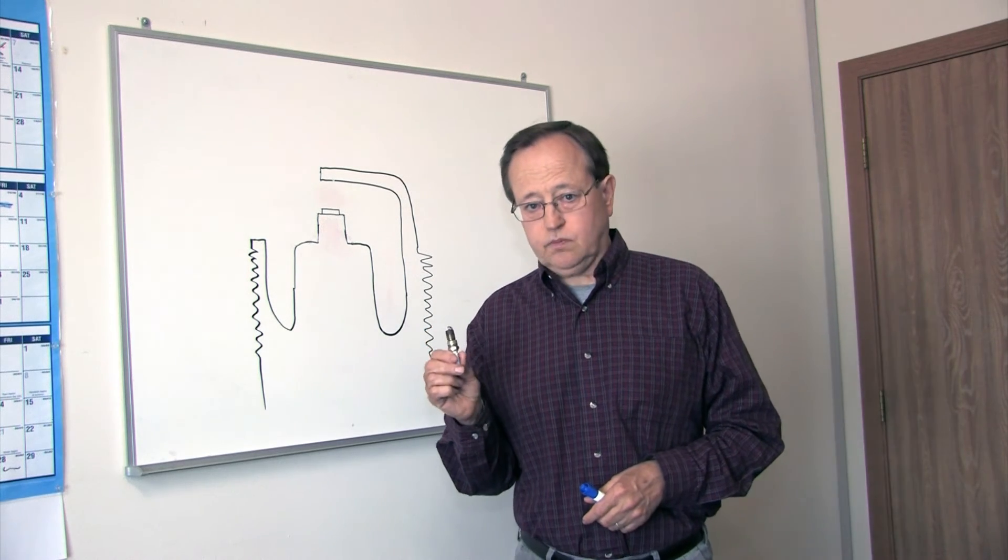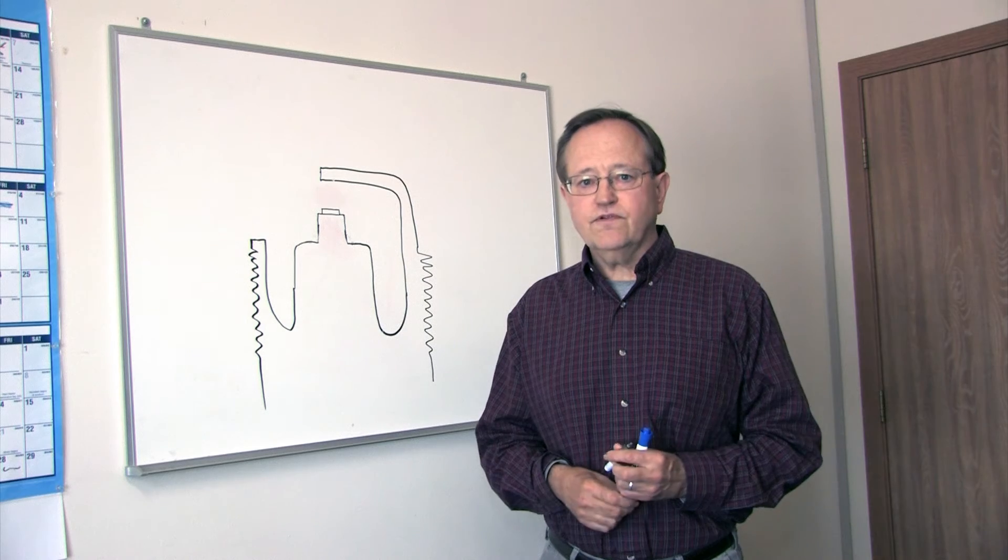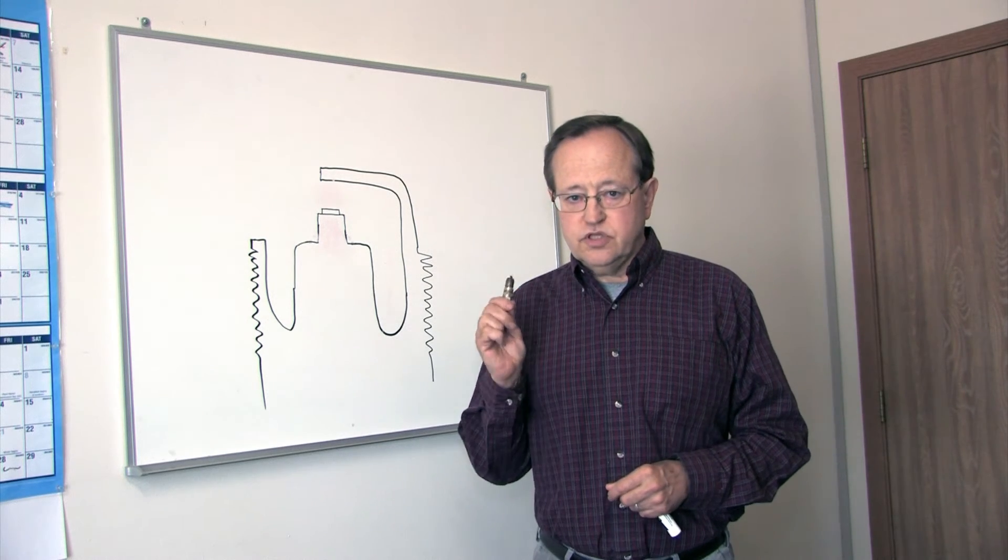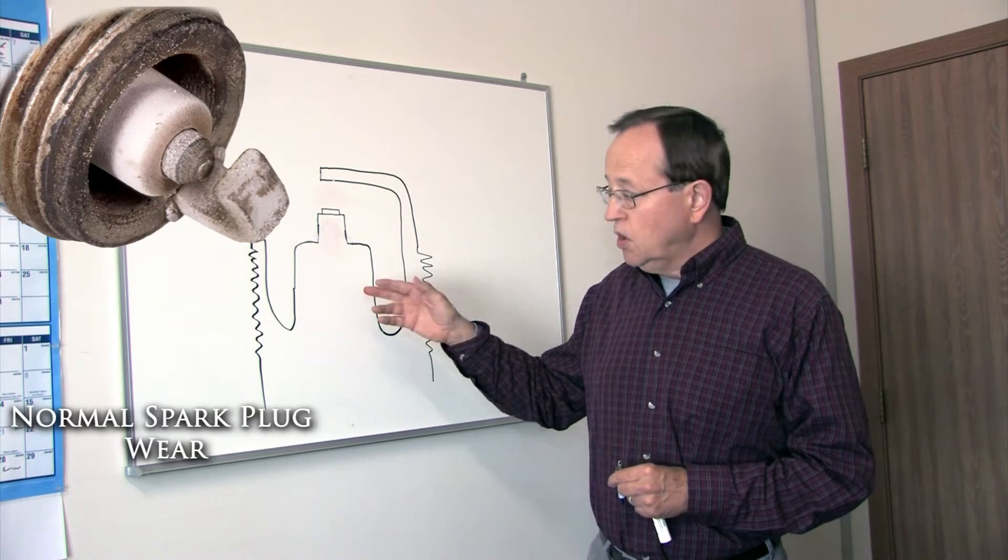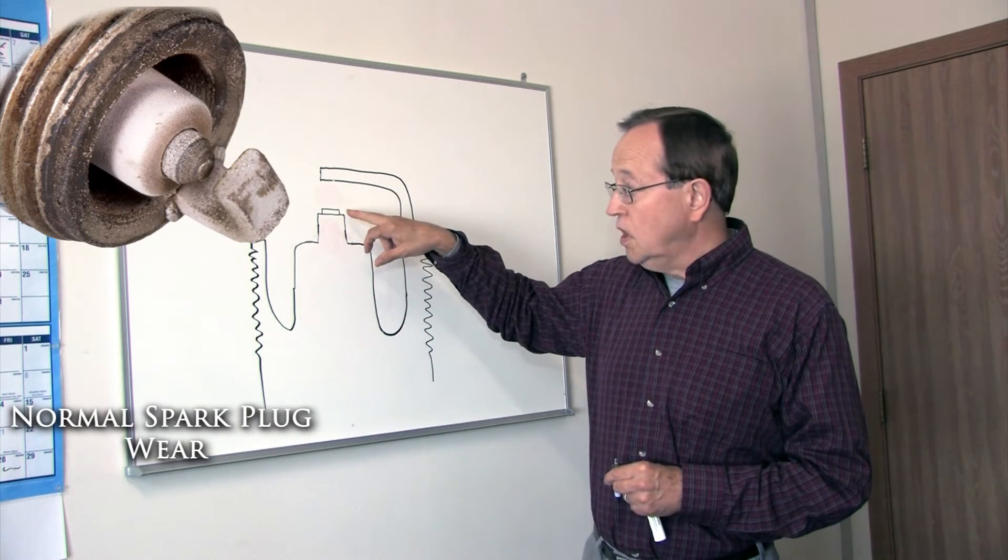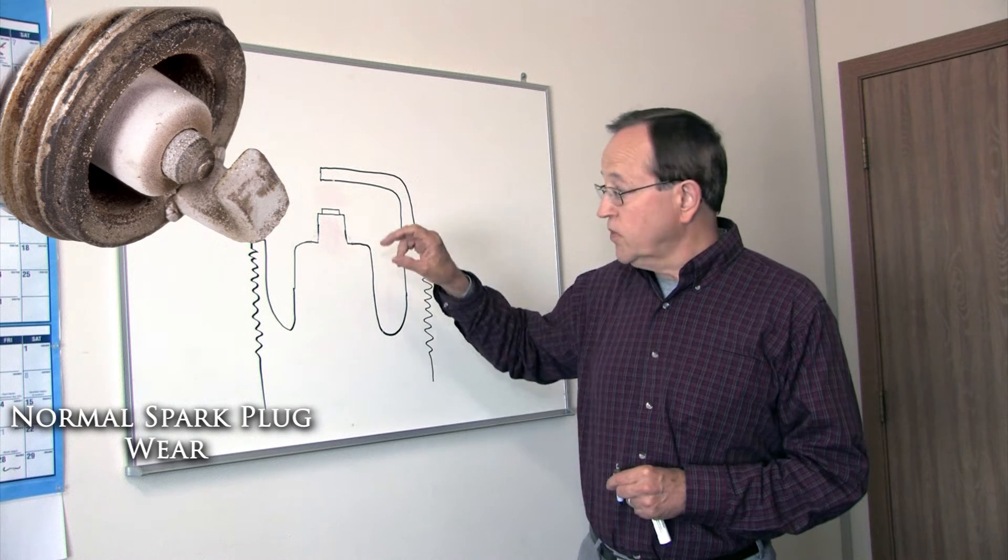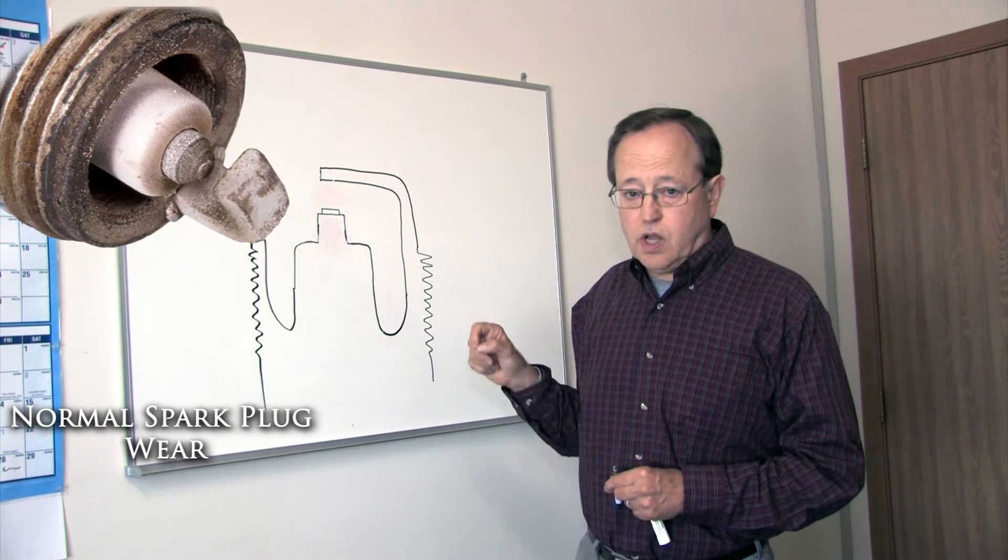We took a look first at the spark plug that you gave us. One of the very first things that we noticed is that this spark plug is damaged. When you look at a normal spark plug, what you see is the central electrode with its piece of platinum on the top, designed to work with the ground electrode.